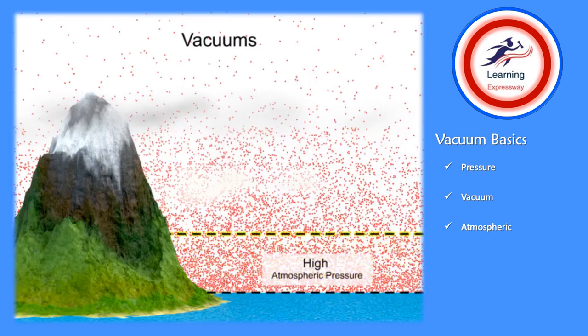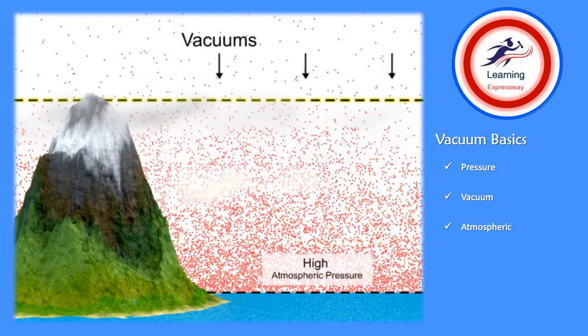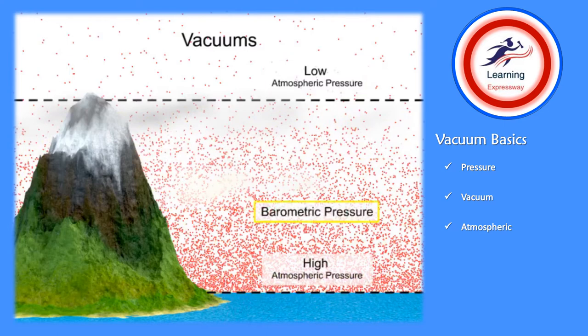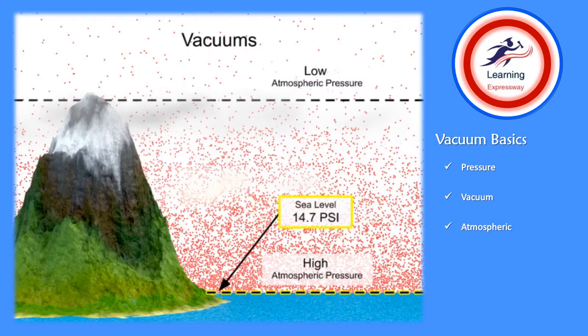As elevation increases, the total amount of atmosphere directly above the surface is much less than at sea level, therefore the atmospheric pressure is much lower. Atmospheric pressure decreases as elevation increases. The maximum force available from a vacuum is dependent on the barometric pressure at its location. At sea level, the barometric pressure is about 14.7 pounds per square inch under standard conditions.